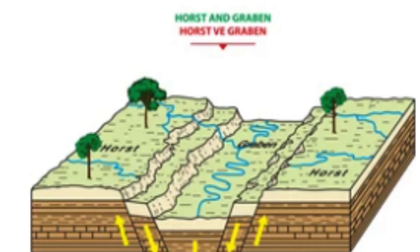Horsts and Grabens are typically found in areas where the earth's crust is being stretched and pulled apart, as is the case in rift valleys. In these regions, two parallel faults will move away from each other, causing the central block of land to rise up and form a Horst. At the same time, the blocks of land on either side of the faults will drop down, forming Grabens.